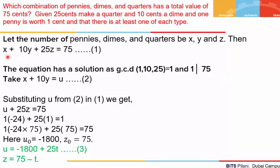So how was this solved? We start by taking any two terms — we can take x + 10y, or 10y + 25z, or x + 25z — and equate it to some variable u multiplied by the GCD of the coefficients. Here we have taken x + 10y = 1·u, where 1 is the GCD of 1 and 10. We substitute x + 10y = u in our original equation, which gives us u + 25z = 75.